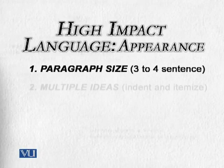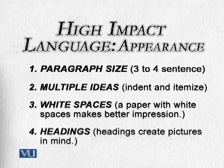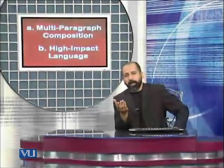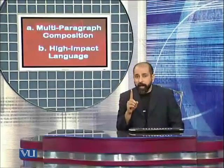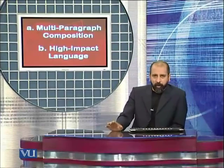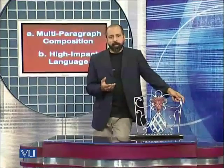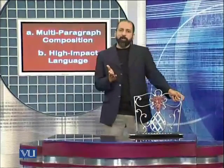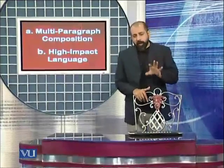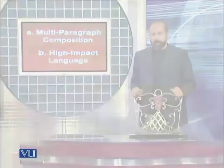High impact appearance consists of: first — paragraph size; second — multiple ideas; third — white spaces; and the last one — headings. A good paragraph for high impact language is the one which has three to four sentences, not more than that. A good sentence has on average 17 to 20 words — exactly the same way, a good paragraph is the one which has three to four sentences. Paragraph length is very important.